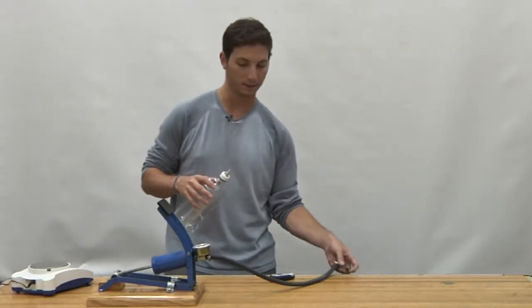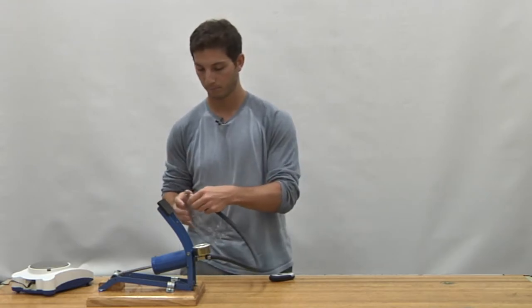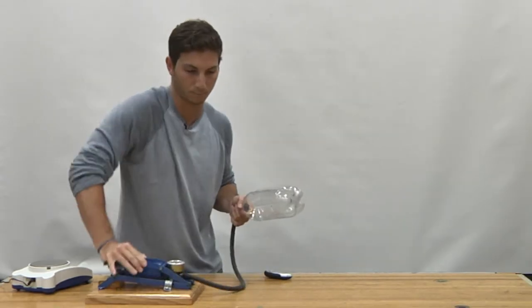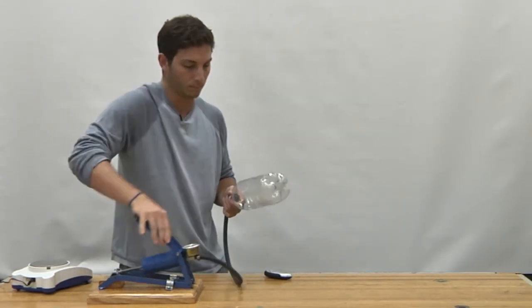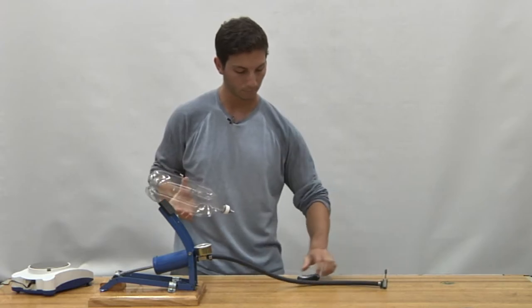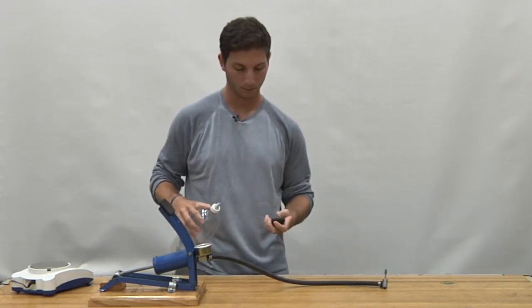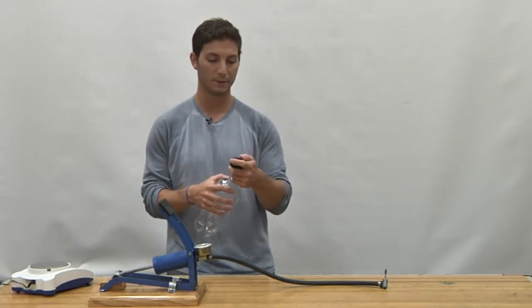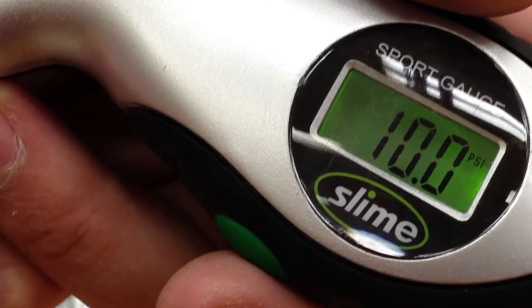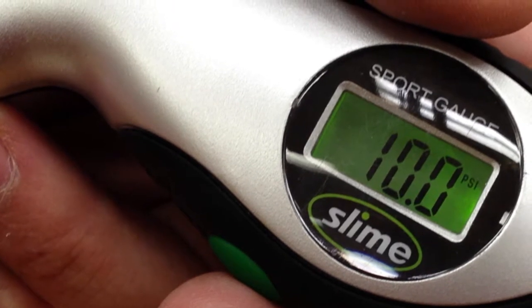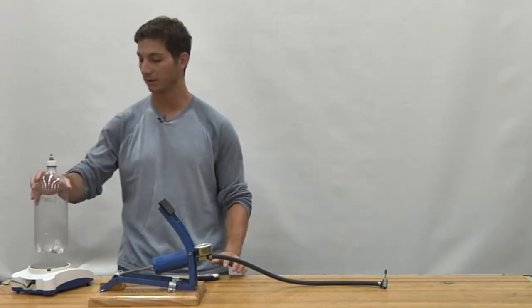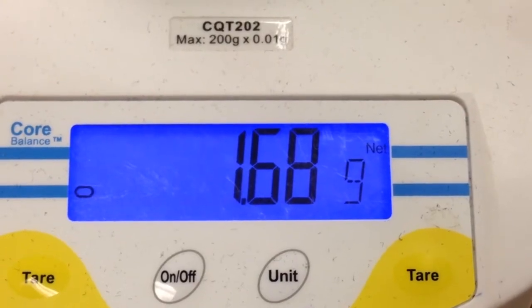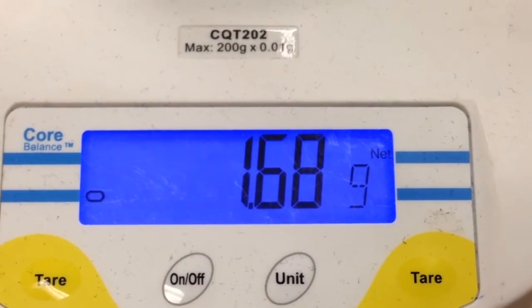You can take the bottle then and attach it to the bike pump and pump it up to 10 psi. Using this gauge, you can see how exact I am. So right now it reads 10 psi. And if we put it back on the scale and find that mass, we'll see that it's 1.68 grams, proving that air does have mass.